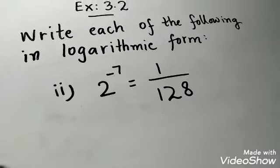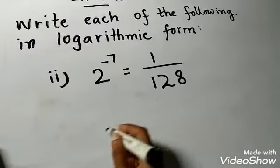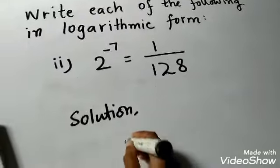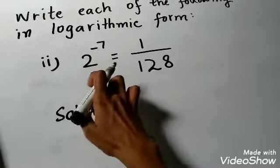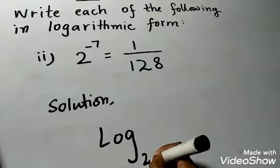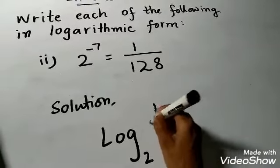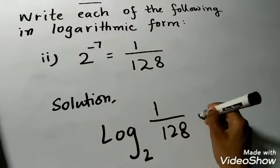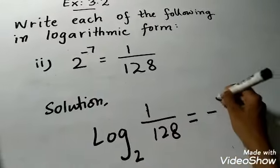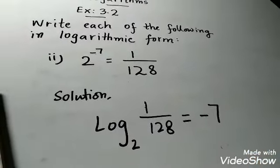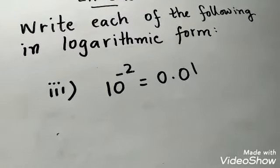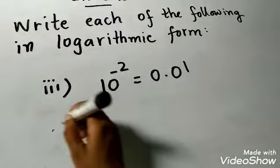Now the second part given here: 2 exponent minus 7. When you write it in logarithmic form, you will write log base 2 of 1 upon 128 is equal to minus 7. So you write log, then the base 2, then 1 upon 128, then equal to minus 7. You have converted it to logarithmic form.